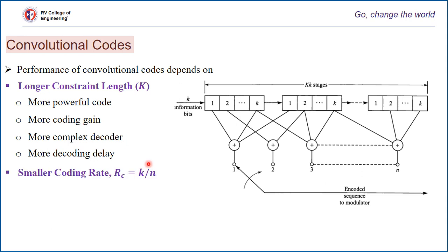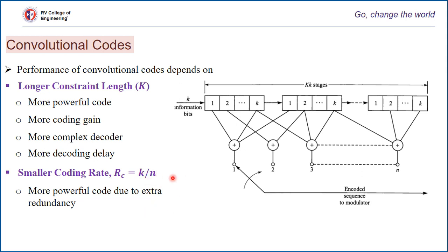The other primary factor is coding rate, defined as K by N. The constraint length should be longer, and the coding rate should be smaller for better performance. If the coding rate is smaller — when N is greater than K — we produce more powerful code due to extra redundancy, making the code more resilient to channel noise. However, with extra redundant bits, you incur less bandwidth efficiency, requiring more bandwidth to transmit the codewords. These two factors come with an additional cost.